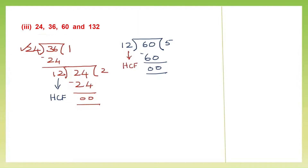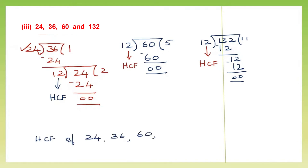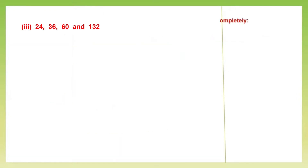So I'm going to use 12 and 132. 12 is outside and we have 132 inside. 12 ones are 12, again 12 ones are 12, minus we get 0. That means 12 into 11 gave us the remainder 0. So 12 is the last divisor that gave us the remainder 0 — that is the HCF. The HCF of 24, 36, 60 and 132 is 12.